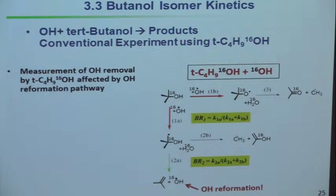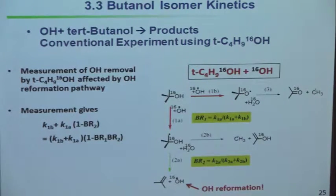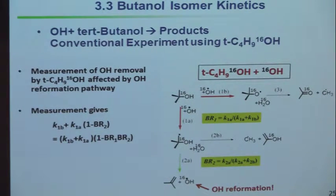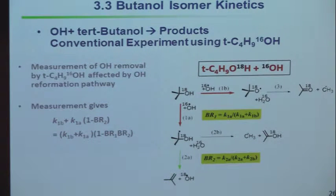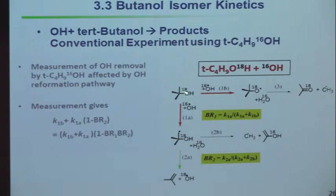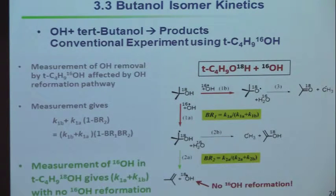When we measure only one thing — OH going away — it's confused by the fact that some of the reaction replaces the OH we started with. So what can we do? We have this tert-butanol made with oxygen-18. Now the channel where OH is formed by this path produces oxygen-18 OH. We measure the oxygen-16 OH. That means we have removed that problem and can keep track. We can infer the relative paths of the two reaction channels.